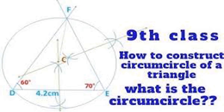Let us construct triangle DEF such that DE is equal to 4.2 cm, angle D is equal to 60 degrees, angle E is equal to 70 degrees, and draw the circumcircle of it. Draw a rough figure and write the given measures. Take page number 84 and see how the rough figure is drawn there. Then draw triangle DEF of the given measures — DE = 4.2 cm, angle D = 60°, angle E = 70°.